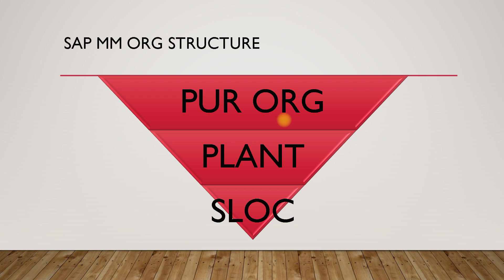The next organization structure in SAP MM is the plant. The least organization structure associated with SAP MM is the storage location. Storage location in SAP MM is only relevant once we are doing the goods receipt, after which material is stored inside the storage location. However, not much information can be obtained about how material is stored or how goods are issued from that level.